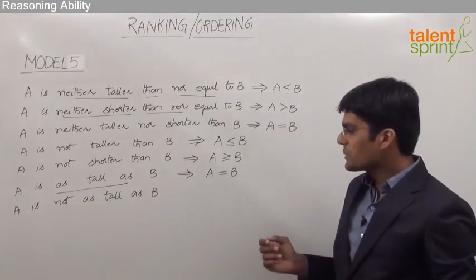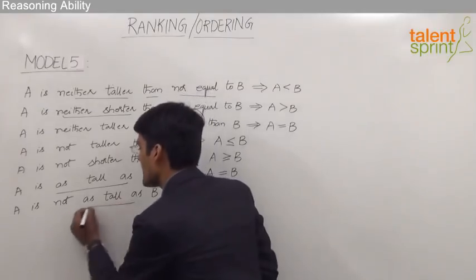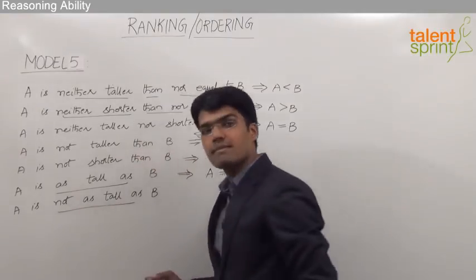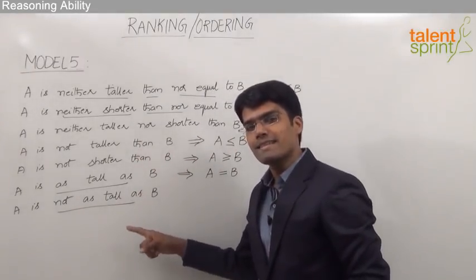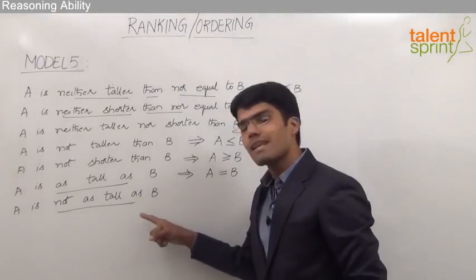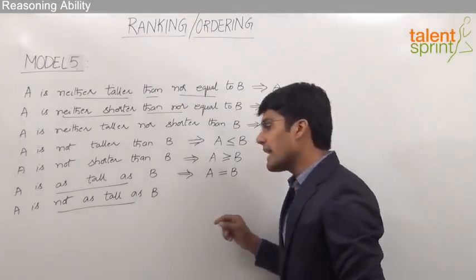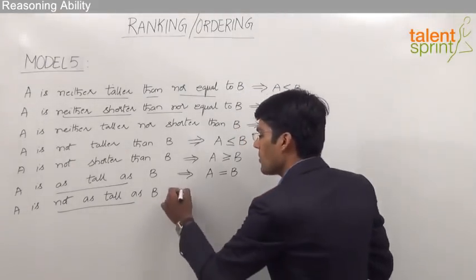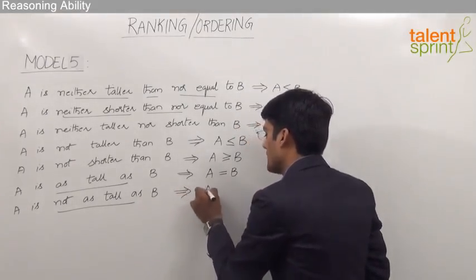The last inequality is 'A is not as tall as B.' It is very important to understand that when the statement says 'A is not as tall as B,' it means A is only shorter than B — strictly less than B.